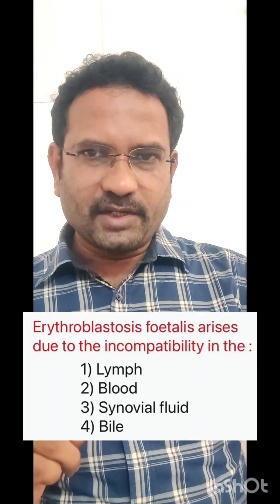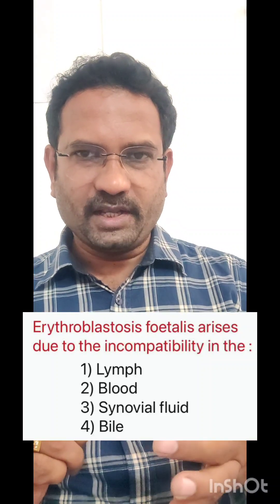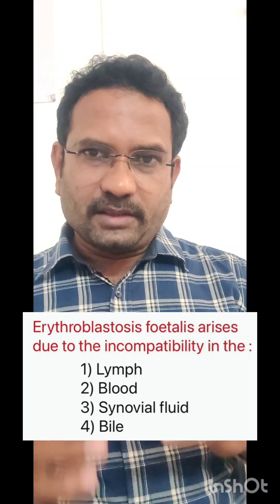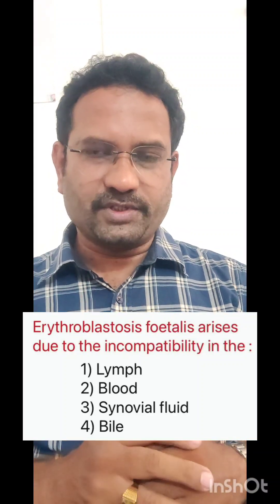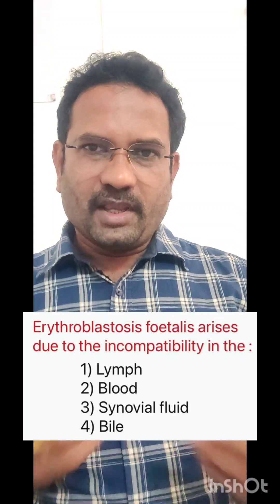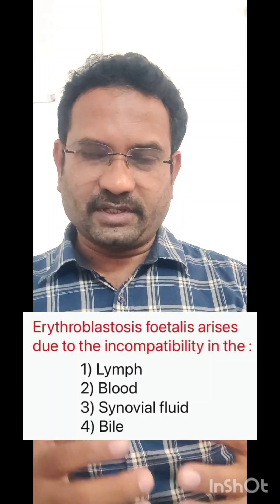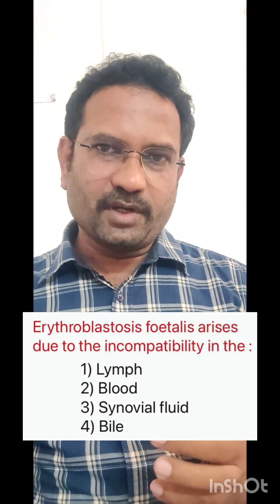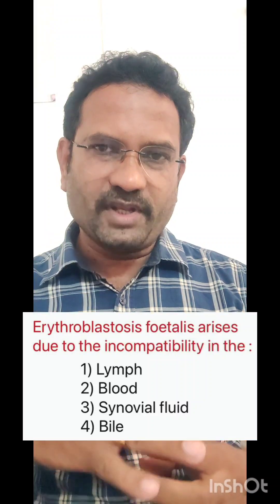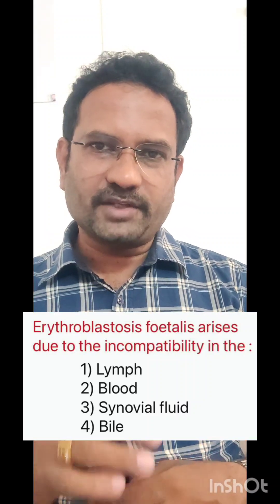When a pregnant mother with RH negative bears a baby with RH positive blood, the mother may develop antibodies against RH positive. The first delivery will be normal. If the second baby also has RH positive blood, the mother's antibodies will cause hemolysis of the baby's blood. This condition is called erythroblastosis fetalis.